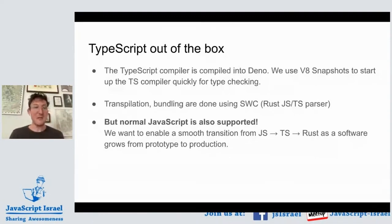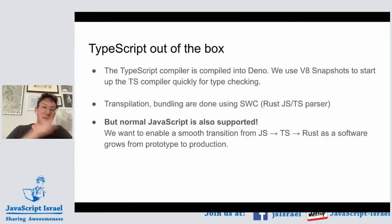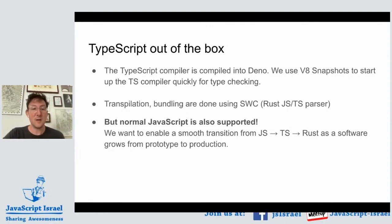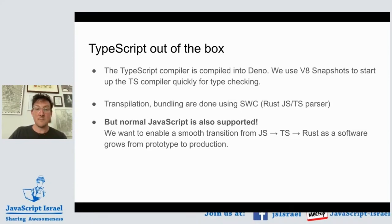At some point you might find there are hot bits of code that need to be optimized. We haven't quite fleshed out this story yet, but the hope is that you can implement those parts in Rust, compile to WASM, and optimize down to native code where necessary. For the most part, most problems are engineering-time bounded rather than CPU-time bounded — you just want to move as fast as possible.